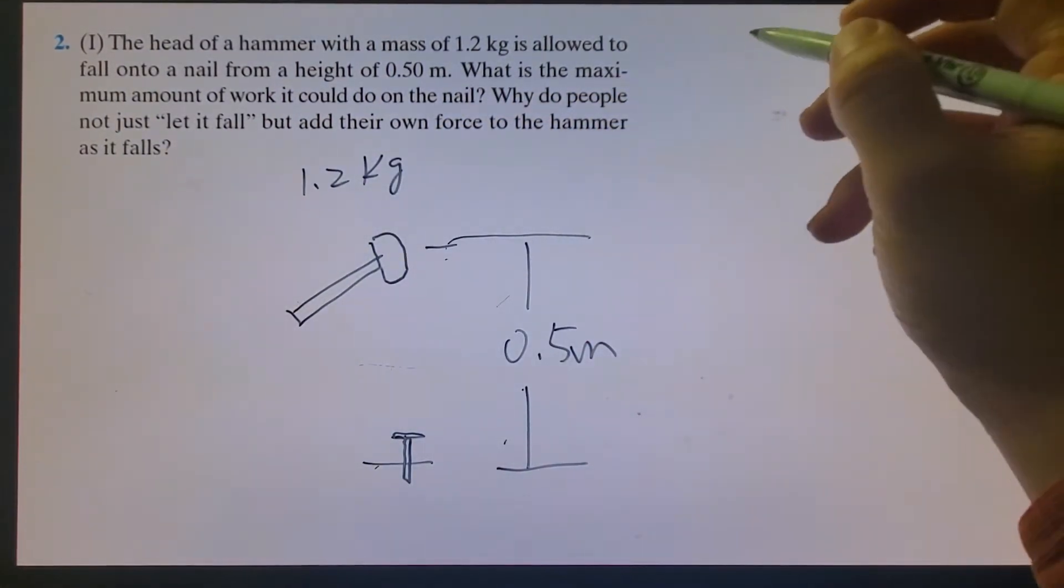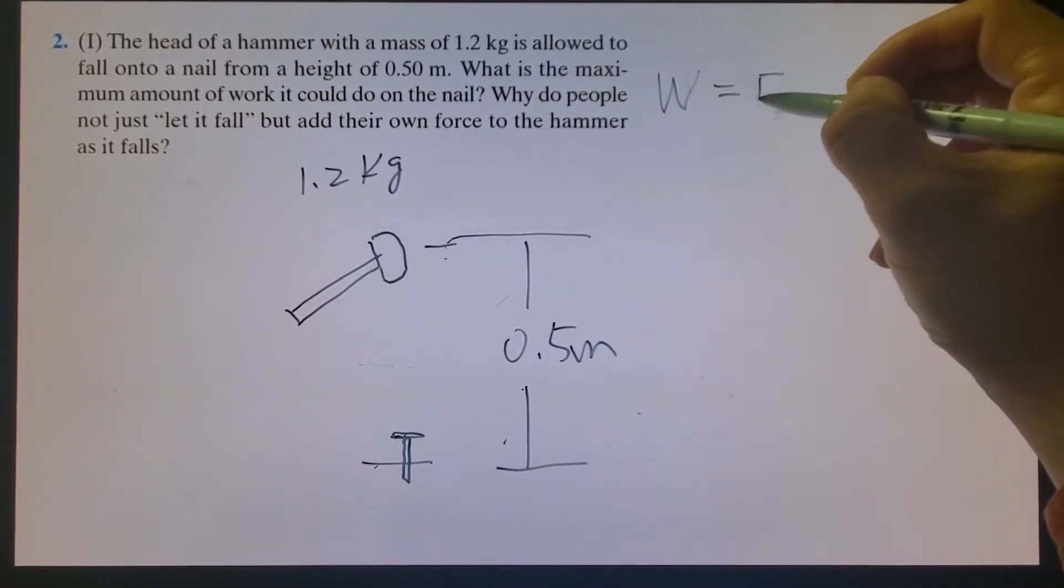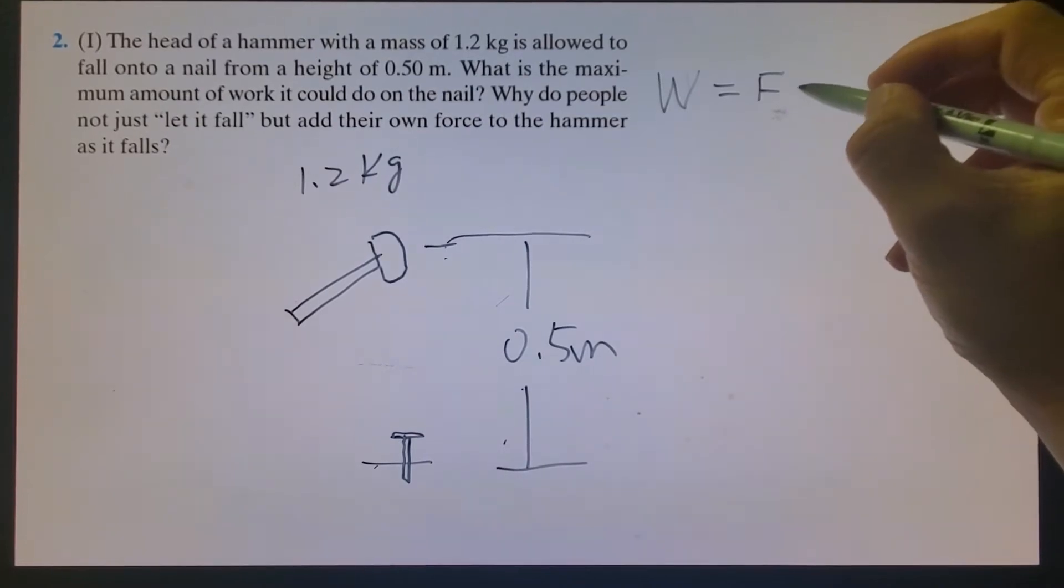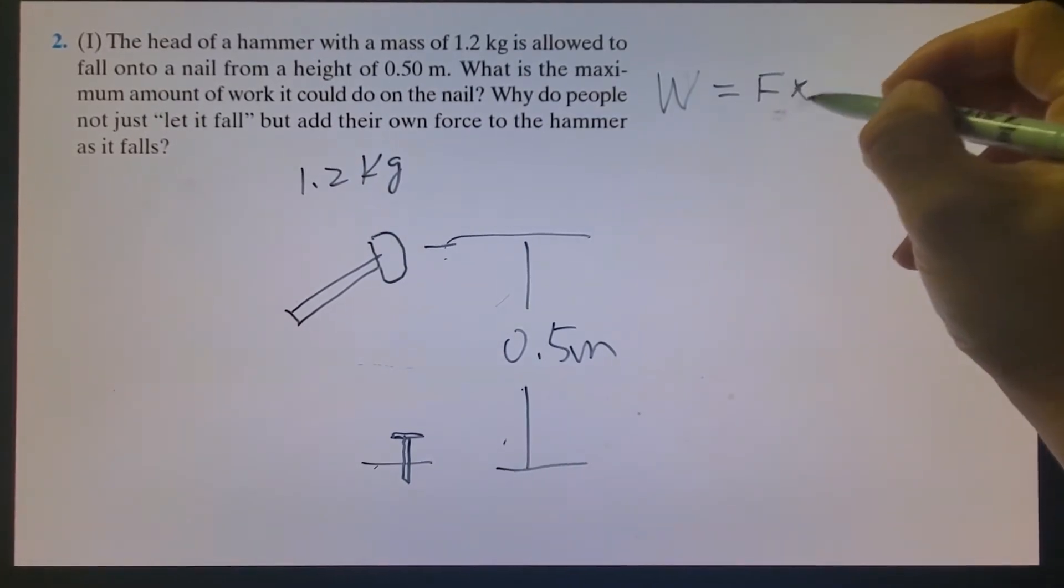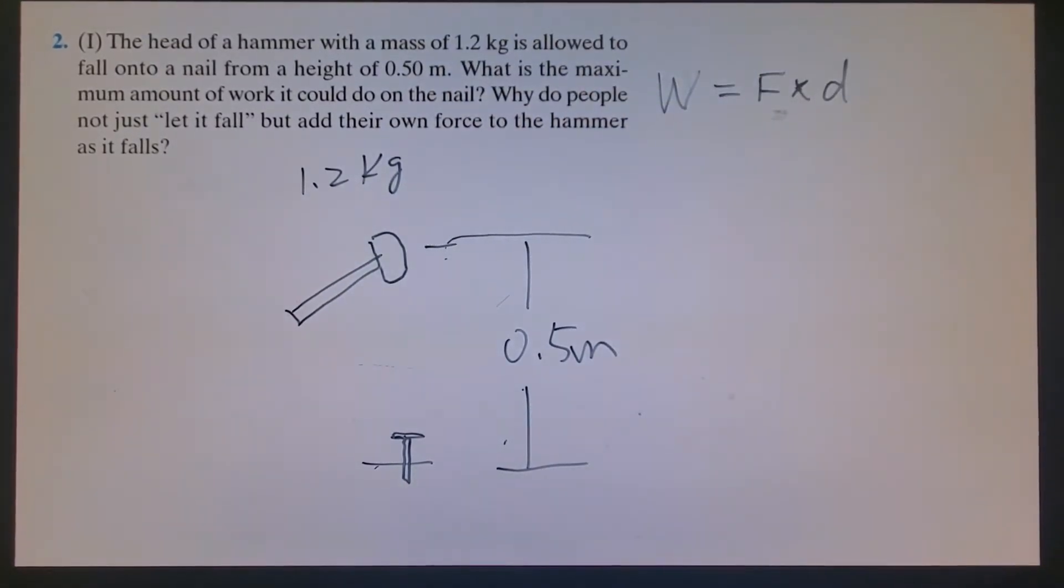Our magical formula is work equals force times distance, if it moves at a constant velocity.